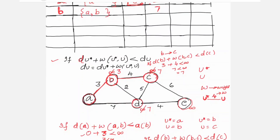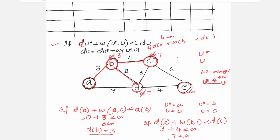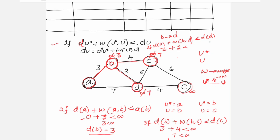For B to D: d(B) + w(B, D) < d(D). Distance to reach B is 3, weight on B-D is 2, so 3 + 2 = 5 < 7. Yes, 5 is less than 7.